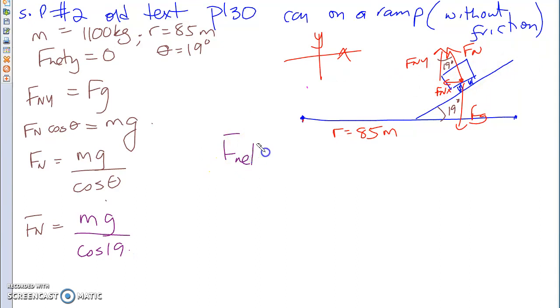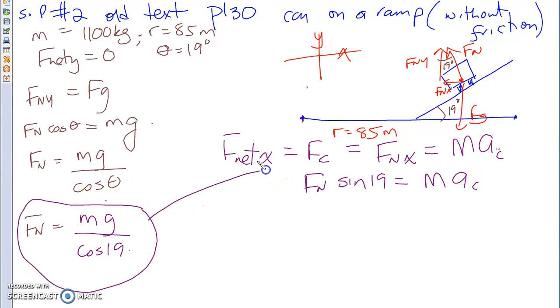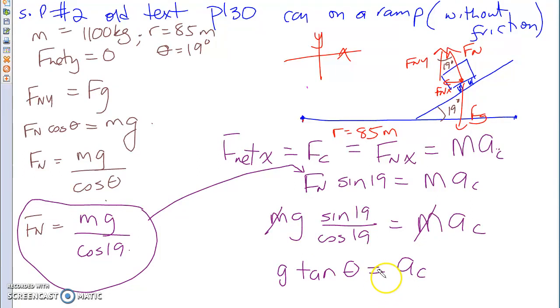Now, we're going to go in the x direction, Fnx. Of course, Fnx also equals to Fc, centripetal acceleration, which equals to Mac, centripetal acceleration times mass. Now, Fnx, in the x direction, is made up of Fn sine of 19, which equals to mass times acceleration. Now, what we're going to do is we are going to sub this into here. And you end up with Mg sine of 19 divided by cos of 19, which equals to Mac. My M and my M will cancel out. Sine over cos will become tan. So, g tan theta equals to Ac.